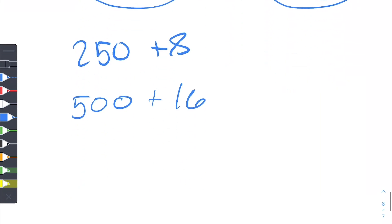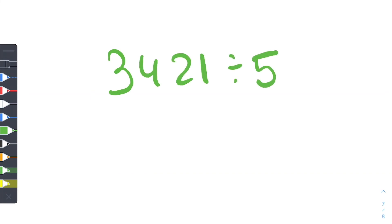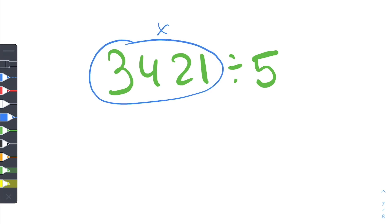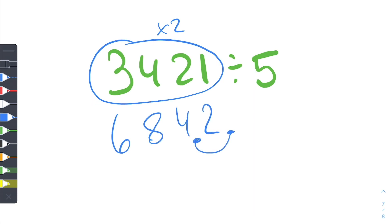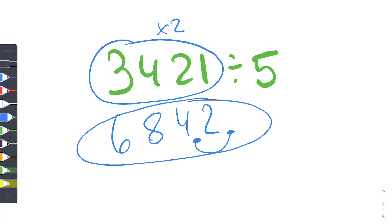So try doing this next one by yourself. We have 3,421 divided by 5 — pause the video and see if you can do it. So you want to grab the first number and multiply it by 2. We can just double each of the digits: 6, 8, 4, and 2. Then grab the decimal and move it over 1 point. So our answer is 684.2.